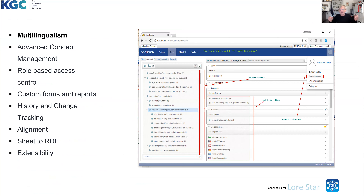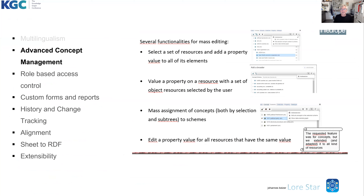Coming to the highlights: multilingualism is clearly one of the main highlights. The Workbench is born multilingual, because in AgroVoc where it started, multilinguality is not merely translation — language is an entity of the vocabulary. I showed you a single concept management tool, but obviously that is not the way for mass editing. There are various possibilities for mass editing of concepts, properties, and resources.